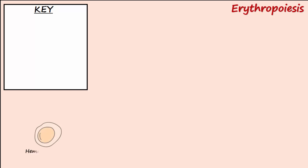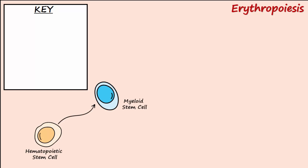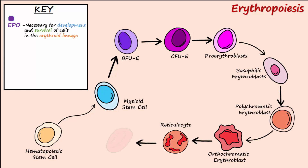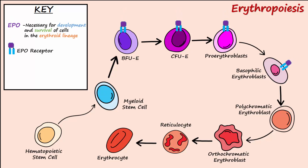Erythropoiesis, or the process of making red blood cells, begins with a hematopoietic stem cell that differentiates into a myeloid stem cell. The development of the erythroid lineage is dependent on the hormone erythropoietin, abbreviated EPO. EPO is an essential growth factor for development and survival of the erythroid lineage. Burst forming unit erythroid, or BFUE, is the first cell in the lineage to express erythropoietin receptors. EPO receptors are also expressed by colony forming unit erythroid (CFUE), proerythroblast, and basophilic erythroblast. When EPO binds to its receptor on these cells, it acts to increase the number of these cells and the rate at which they differentiate.